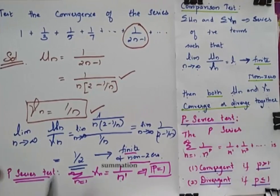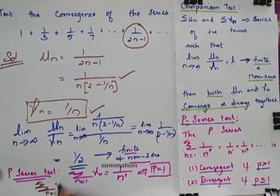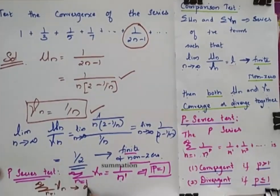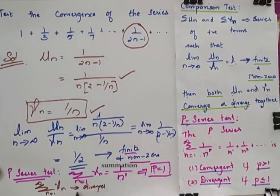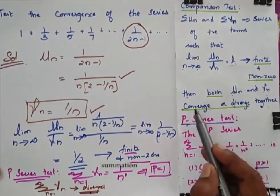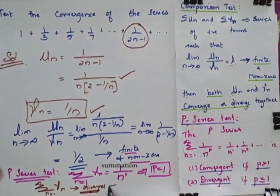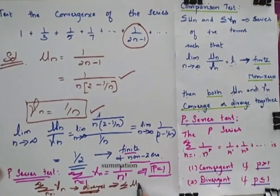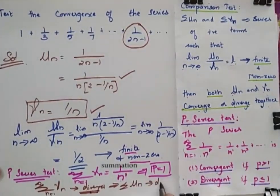So I can say that now my summation n ranging from 1 to infinity, my Vn diverges. So when I say that my Vn diverges, it implies that my Un also diverges. So this implies that summation Un also diverges.